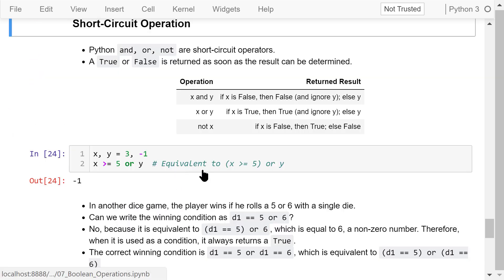Python and, or, not are short circuit operators. A true or false will be returned as soon as the result can be determined. That means, if the result can be determined based on only a part of the expression, the rest of the expression will not even be evaluated.